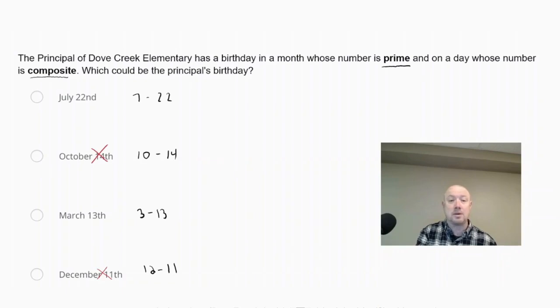All right, so 3 and 7 are both prime, so now we need to check the day. Okay, so on a day whose number is composite, well, 13 is another prime number. So 13 is not composite. So that means our answer must be July 22nd.